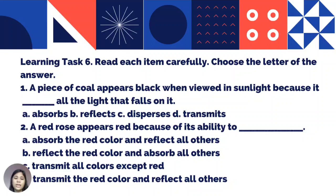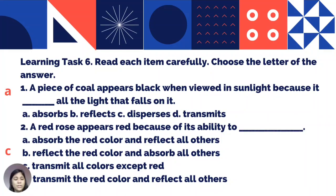For Learning Task 6, read each item carefully and choose the letter of the correct answer. Number one: a piece of coal appears black when viewed in sunlight because it blank all the light that falls on it — A: absorbs, B: reflects, C: disperses, or D: transmits. Number two: a red rose appears red because of its ability to blank — A: absorb the red color and reflect all others, B: reflect the red color and absorb all others, C: transmit all colors except red, or D: transmit the red color and reflect all others. Correct answers: number one — A, absorbs; number two — C, transmit all colors except red.